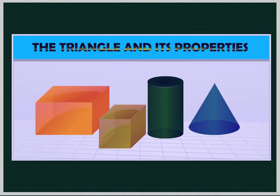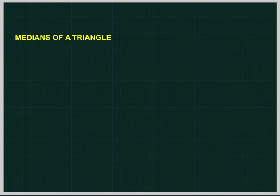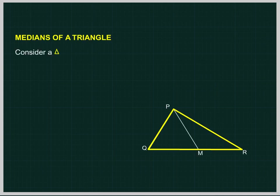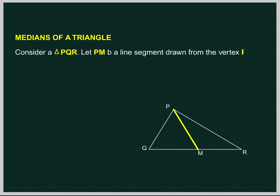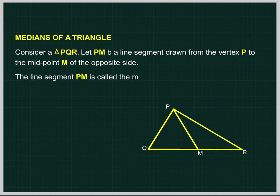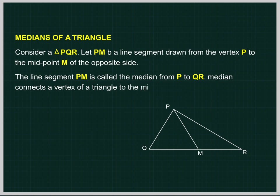The Triangle and Its Properties. Medians of a Triangle. Consider a triangle PQR. Let PM be a line segment drawn from the vertex P to the midpoint M of the opposite side. The line segment PM is called the median from P to QR. A median connects a vertex of a triangle to the midpoint of the opposite side. A triangle has three medians.